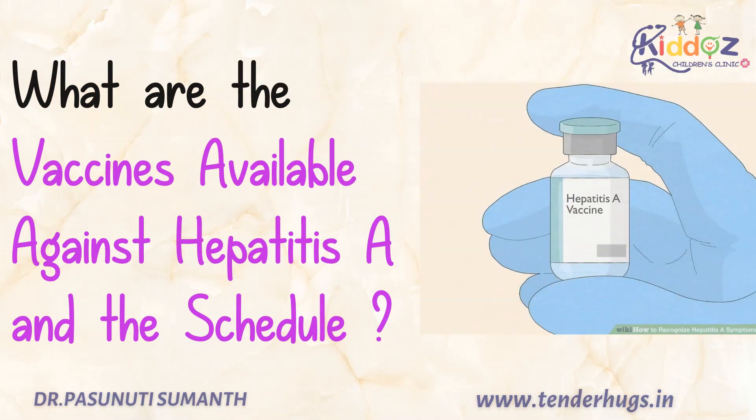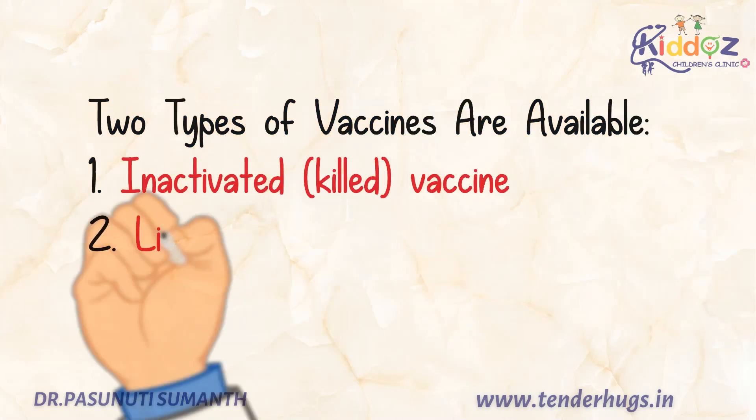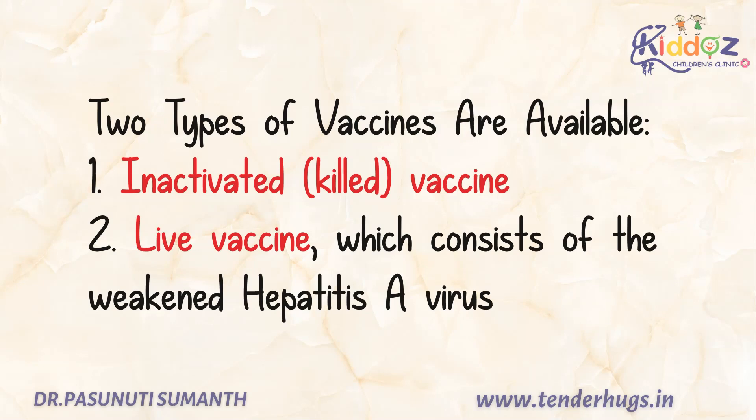Now we'll see what are the types of vaccines available against hepatitis A and the schedule of these vaccines. Presently, there are two types of vaccines available: the first one is inactivated vaccine, and the second one is live vaccine.